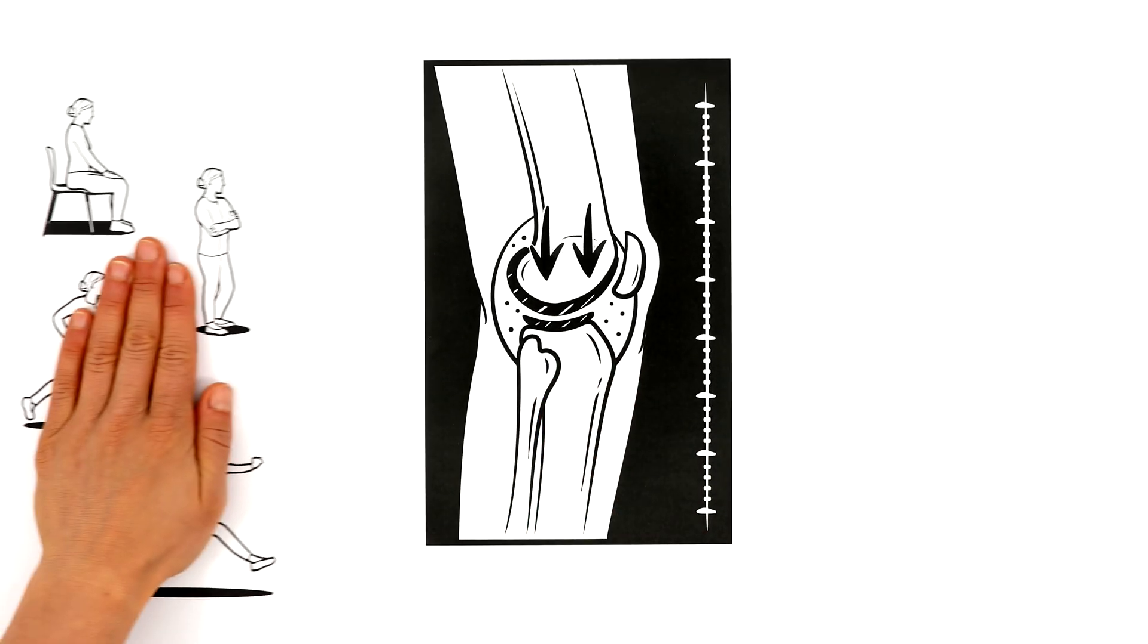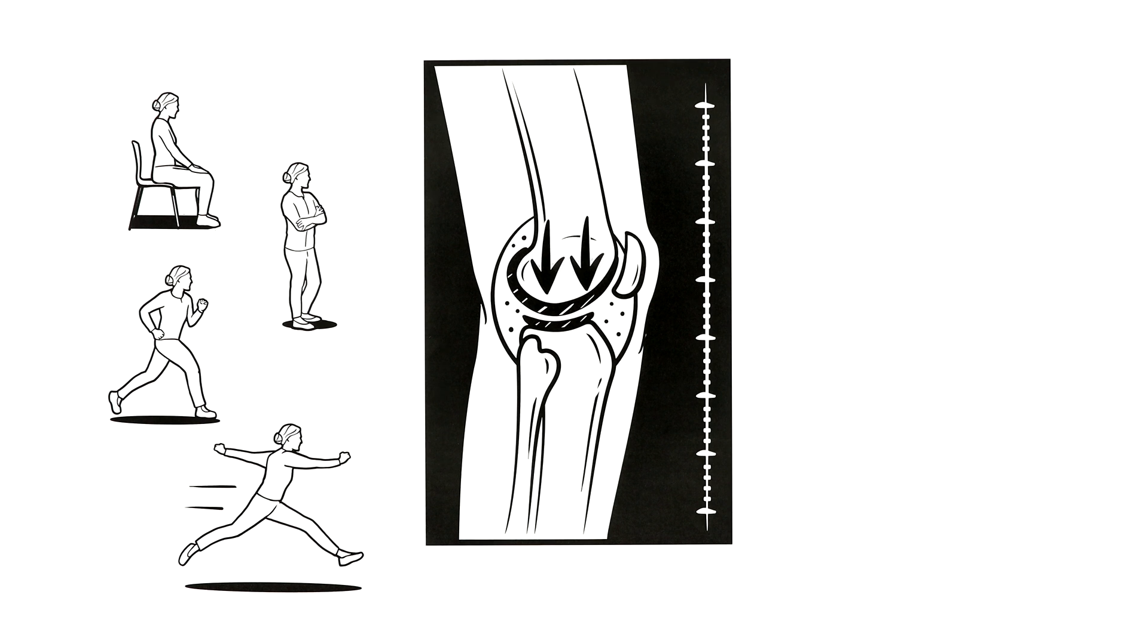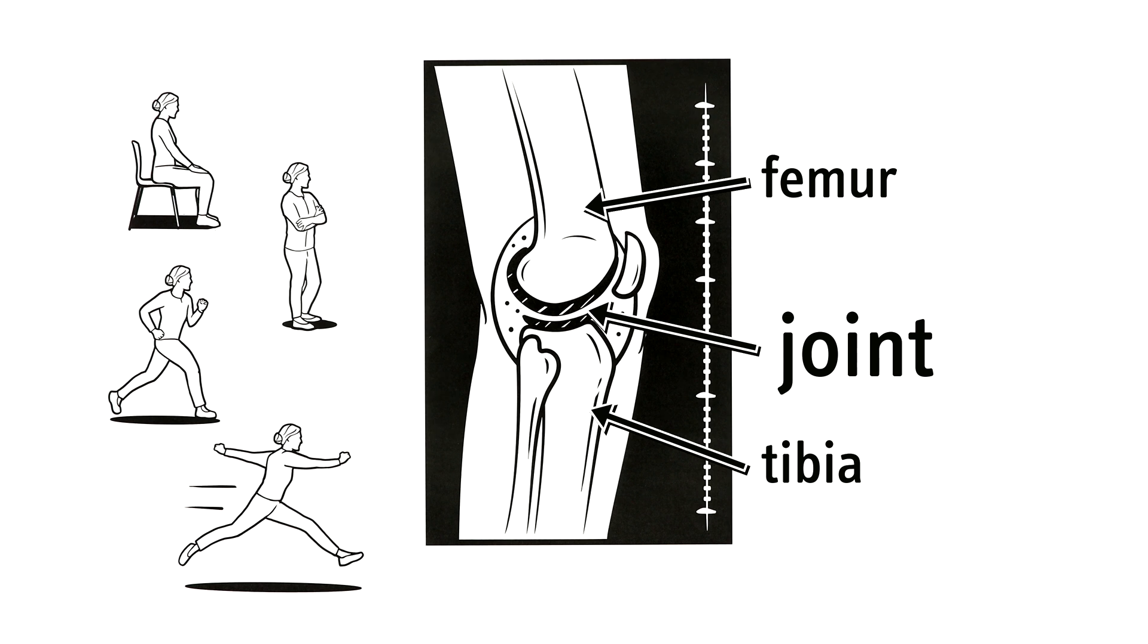Our bones support our body weight and are exposed to forces each time we move. Every bone in our body sits in a joint, like here in the knee where the thigh bone, the femur, meets the lower leg bone, the tibia.